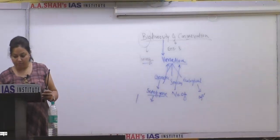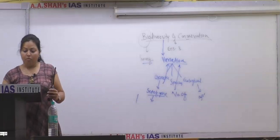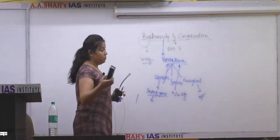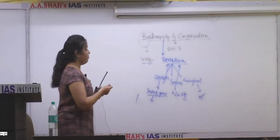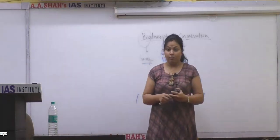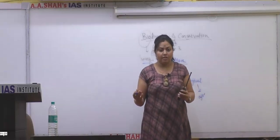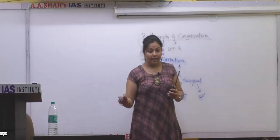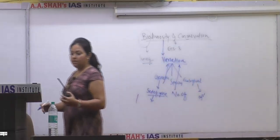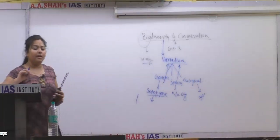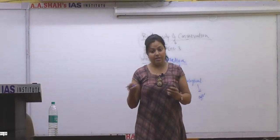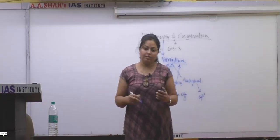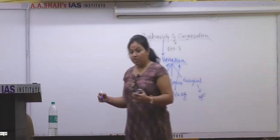Now we will see the scope of biodiversity — these are points you can use in the mains. Why is biodiversity very important? Why are we conserving biodiversity? What is the need to maintain biodiversity? Why did the Biodiversity Convention Act come? The main role is the ecological role — to balance the ecosystem. Biodiversity provides us various services: medicinal and social benefits.